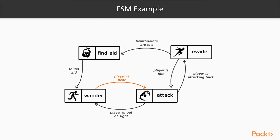Now a more complex example: a first-person shooter bot. The default state is wander. When the player is nearby, the bot goes to the attack state. Depending on the condition, it transitions between wander, attack, and evade states. If the health is low, it goes to the find aid state.